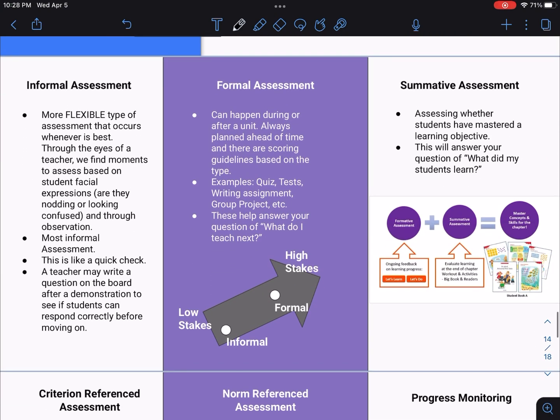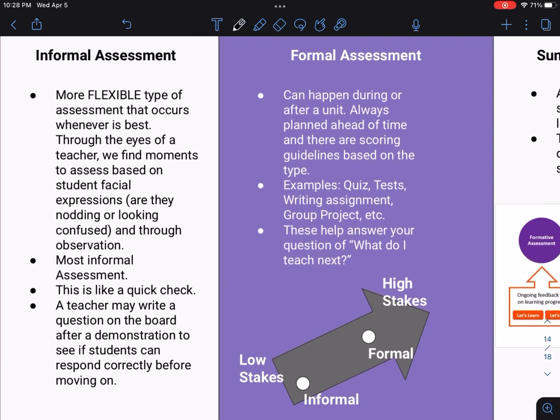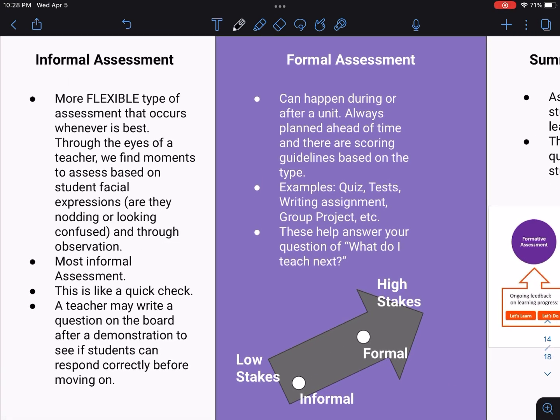So informal assessment is a more flexible type of assessment. It occurs whenever is best. Through the eyes of a teacher, you can find moments to assess students. You can base this on their nonverbal cues. Are they looking? Are they nodding? Are they frustrated? Are they understanding it? And you can do this just by observing them. This is the most informal assessment possible, which is why it's called informal assessment. Think of it like a quick check. A teacher may write a question on the board after a lesson, and she or he might want to see if students can respond correctly before moving on.